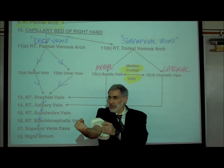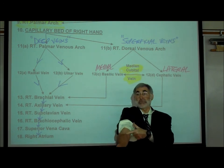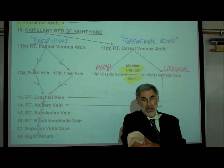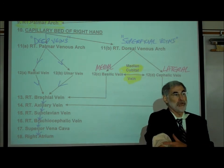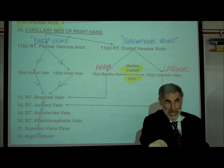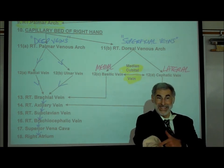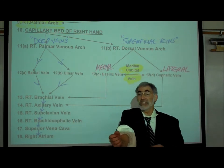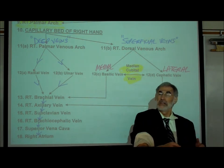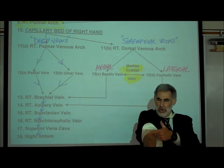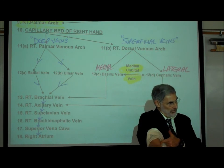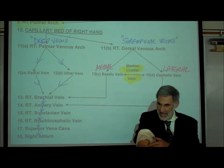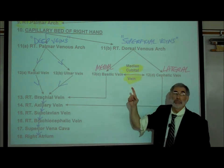Looking in the antecubital space — the front side of your elbow — this is the favorite place to draw blood and connect an IV drip line. You'll see at least one vein, sometimes more, running at an angle. That is the median cubital vein, connecting the basilic on the medial side and the cephalic on the lateral side.